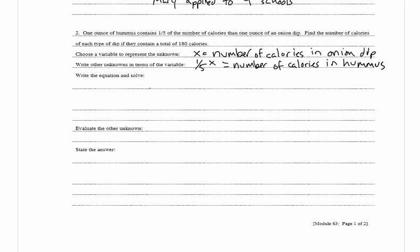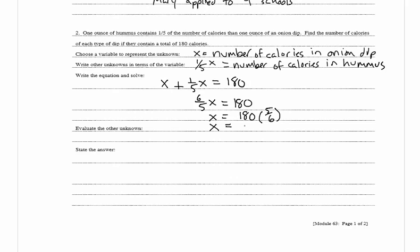Now we write the equation and solve. We have x representing the calories in the onion dip plus one fifth x representing the calories in the hummus, and total they contain 180, so x plus one fifth x equals 180. Combining like terms, one plus one fifth equals six fifths, so six fifths x equals 180. Multiplying both sides by five sixths gives x equals 180 times five sixths, so x equals 150.